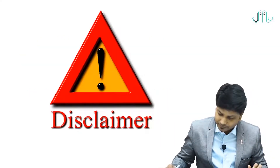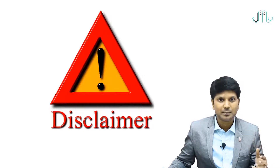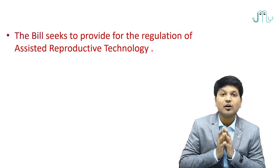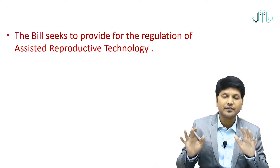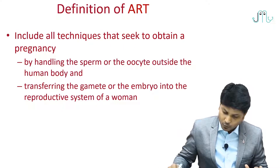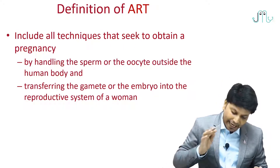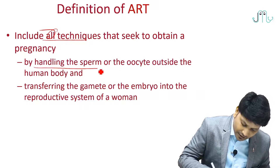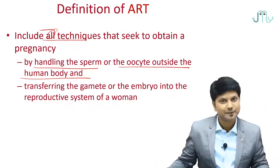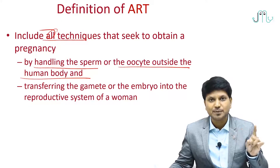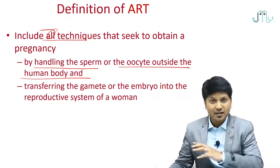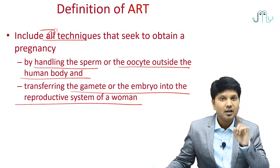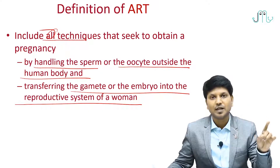What are the features of it? It is only a bill, so there can be changes or amendments later. This bill is for the regulation of all Assisted Reproductive Technologies. The definition of ART includes all the techniques that handle the sperm or the oocyte outside the human body, or when you are transferring the gamete or the embryo back into the reproductive system of the female — that also comes under ART.